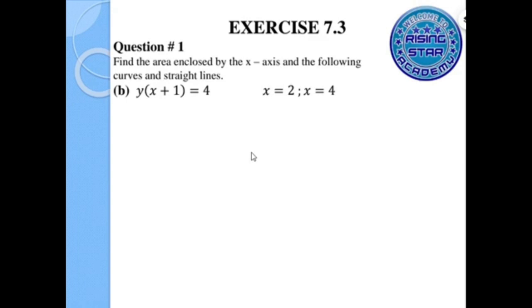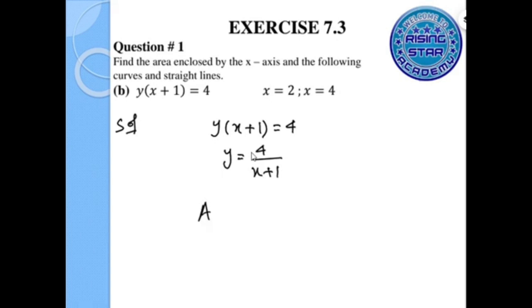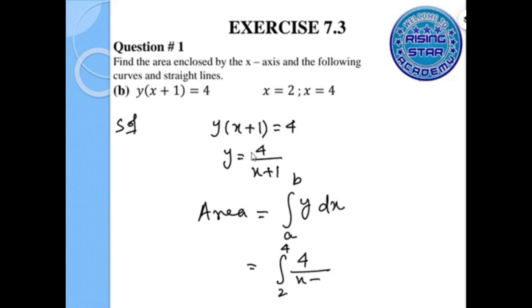For question 1 part b, we will write the given function and make y the subject: y equals 4 over x plus 1. Now I will apply the formula for area, which is the integral from limit a to b of y dx. The lower limit is 2, the upper limit is 4, and the y value is 4 over x plus 1.